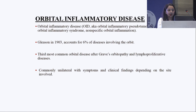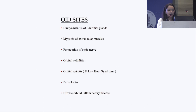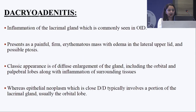Idiopathic orbital inflammatory disease — pseudotumor or IOID — is the third most common orbital disease causing inflammation after Graves' orbitopathy and lymphoproliferative diseases. Common sites for IOID are the lacrimal glands, extraocular muscles, perineuritis of the optic nerve, orbital cellulitis, orbital apicitis (also known as Tollosa-Hunt syndrome), periscleritis, or diffuse orbital inflammatory disease.